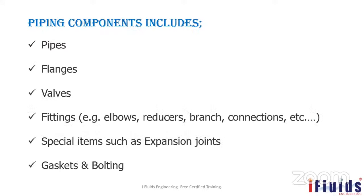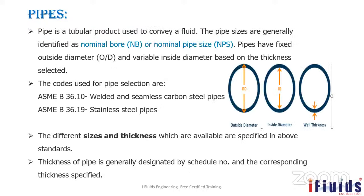A pipe is a tubular product used to convey a fluid. It is generally identified by nominal bore or nominal pipe size (NPS). Pipes have a fixed outside diameter (OD), but a variable inside diameter (ID) based on the thickness selected. For example, for a 1 inch pipe, the OD will be 33.3 mm, but the ID will differ based on the schedule — the name for pipe wall thickness.